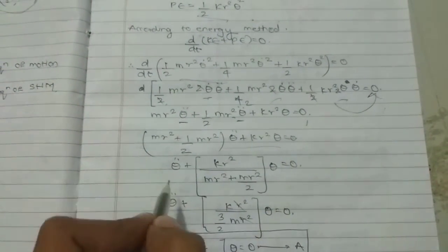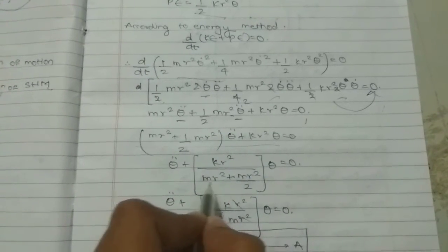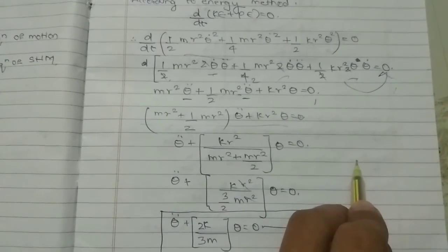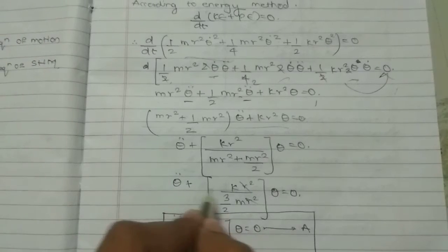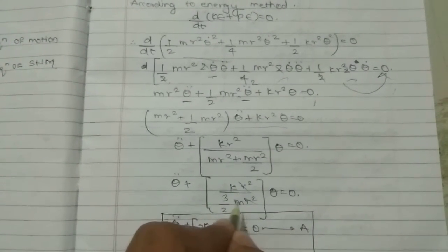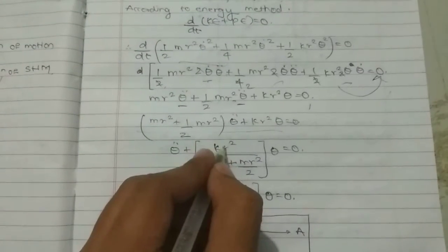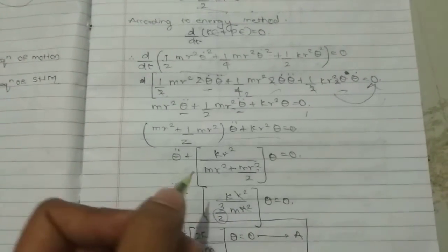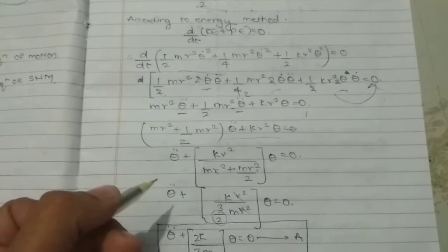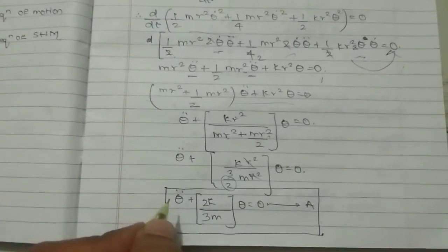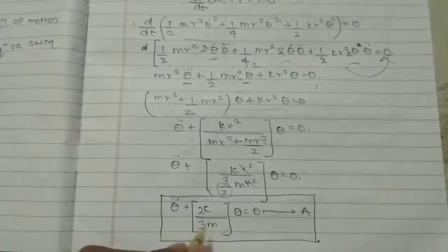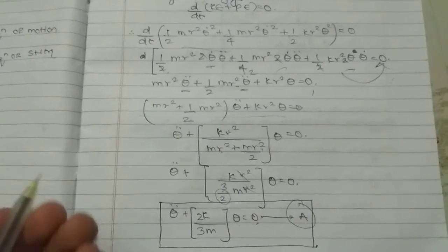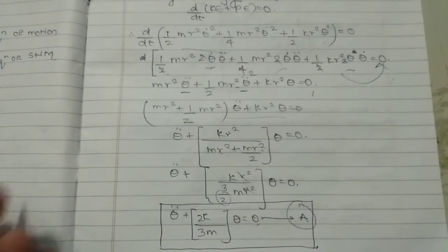Further solving: theta-double-dot plus [k*r² / (m*r² + m*r²/2)]*theta equals zero, then theta-double-dot plus [k / (3m/2)]*theta equals zero. The r² cancels, and putting the 2 from the denominator into the numerator, we get theta-double-dot plus (2k / 3m)*theta equals zero, which is the same equation as obtained by the equilibrium method.